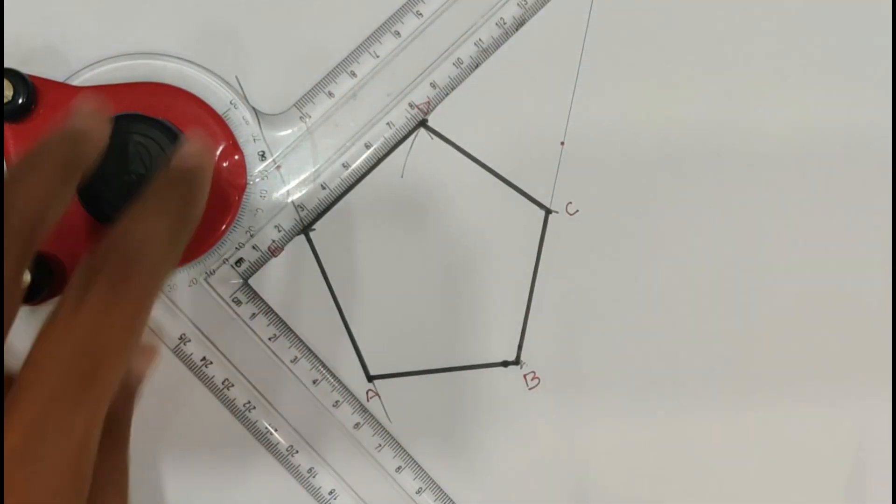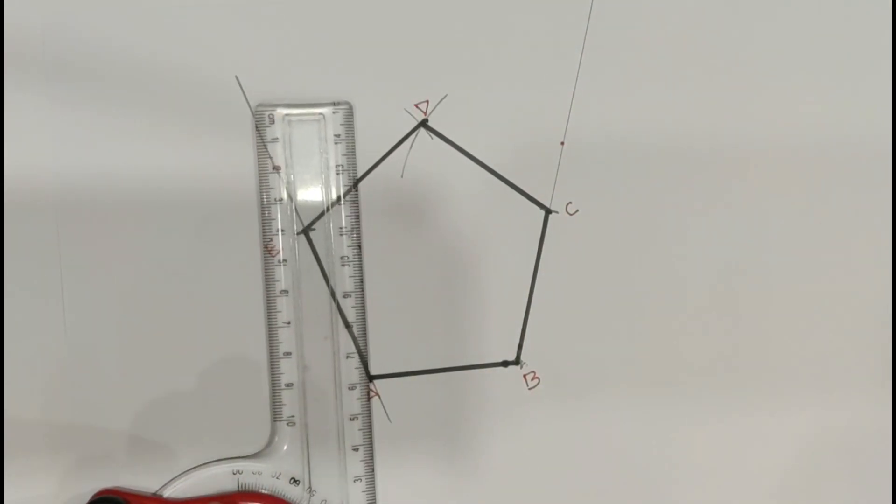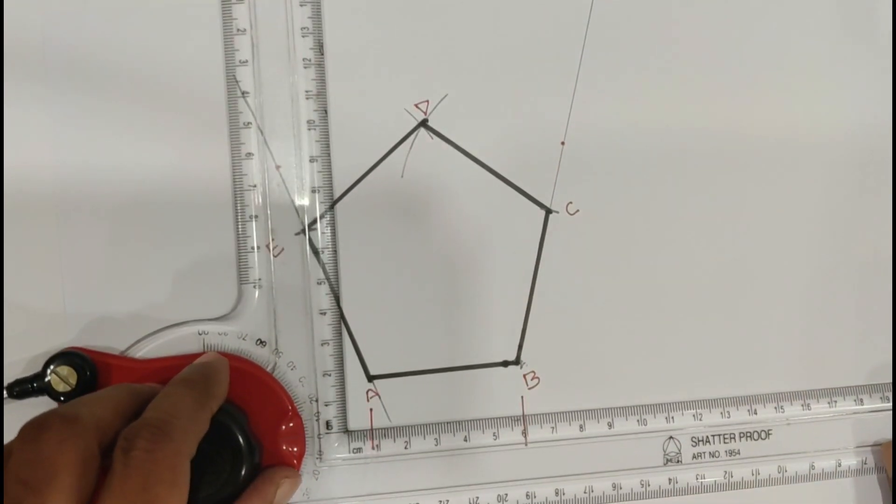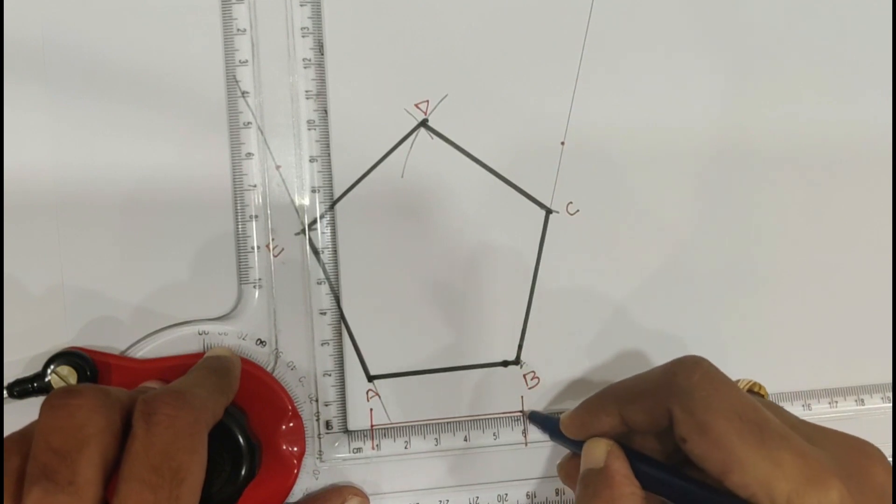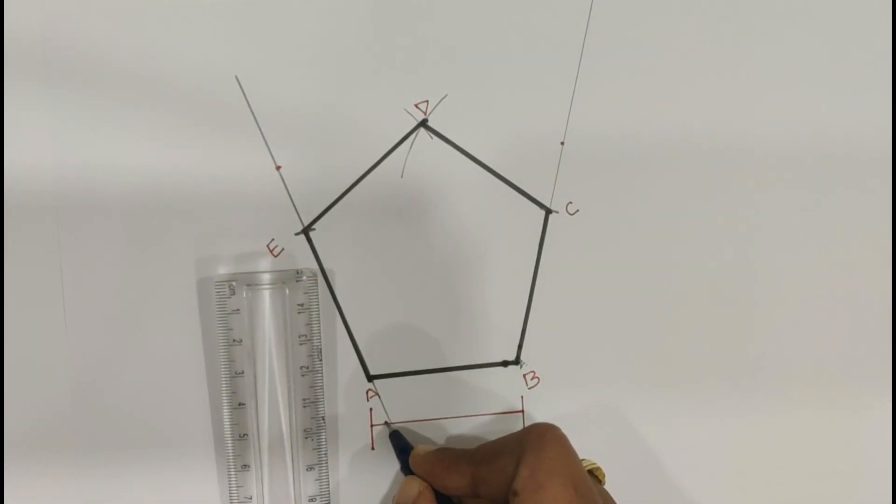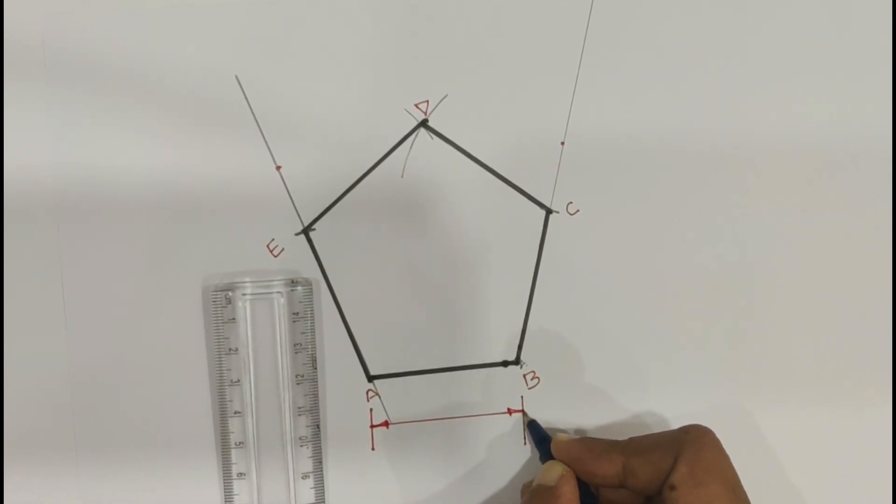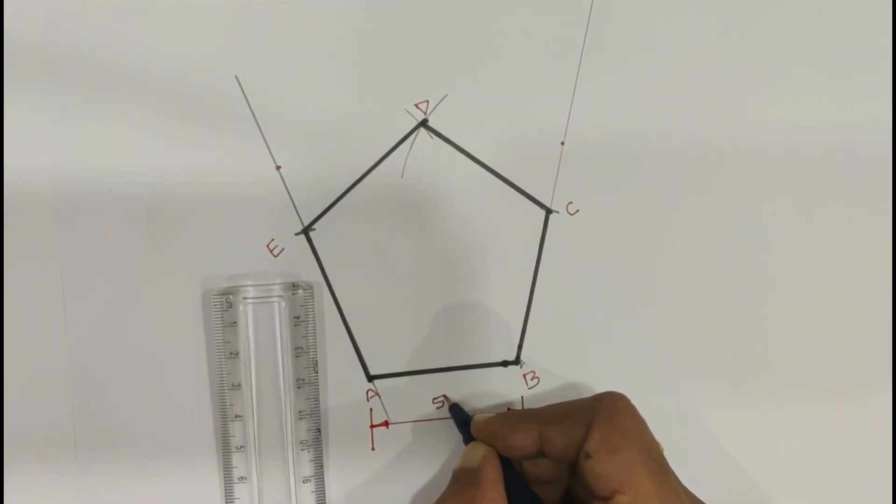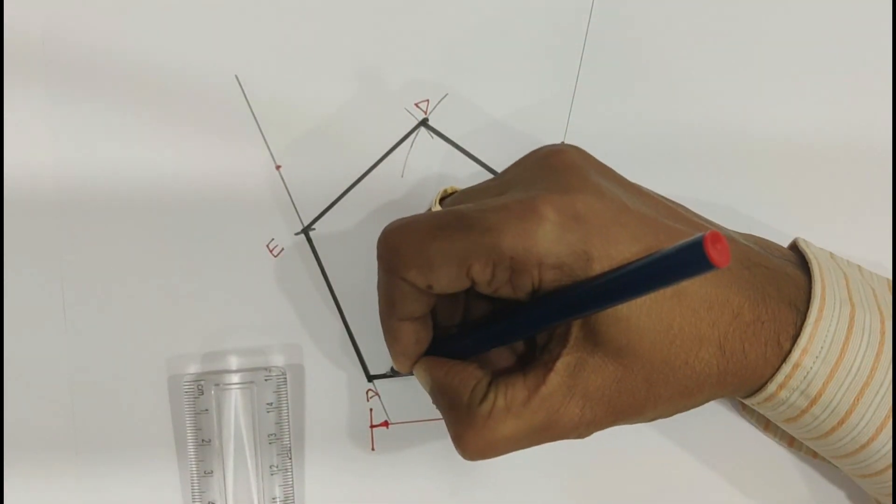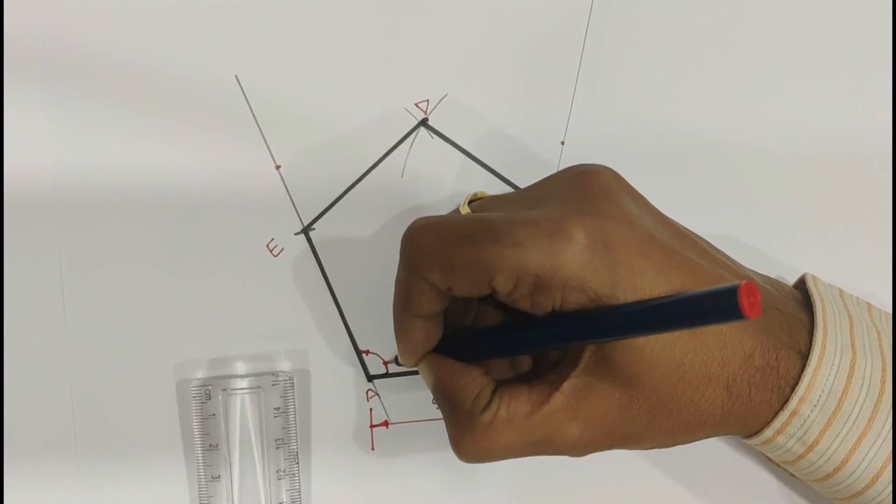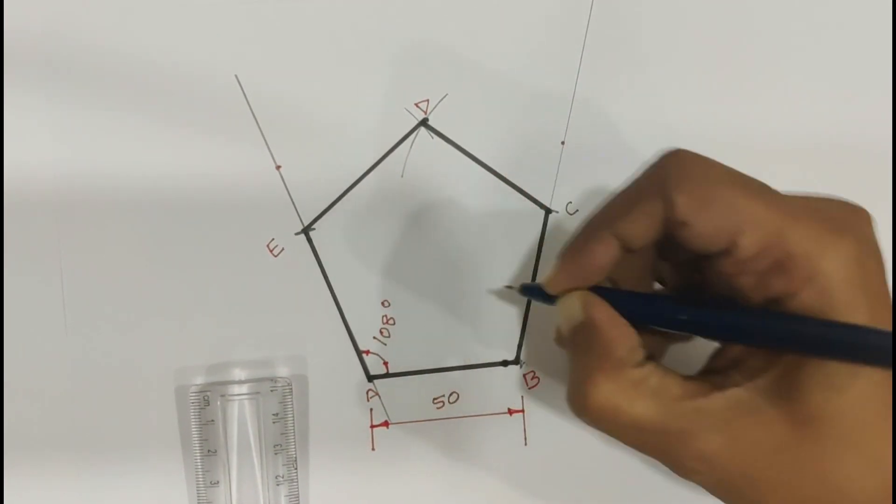Now we will do the dimensioning. Draw extension line. After that dimension line. Say 50. And angle between two sides is 108 degrees.